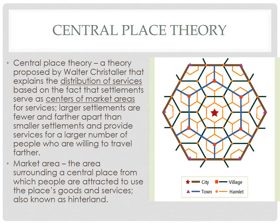This is a good example of a functional region, with the node being the city at the center of a market area. The market area, or hinterland, is the area surrounding a central place from which people are attracted to use the place's goods and services. While rank size rule gave a distribution based on population, central place theory creates a distribution based on services. The population of settlements will dictate the types of services provided and the size of the market area.